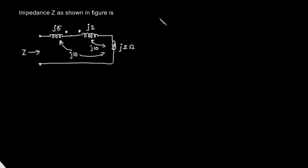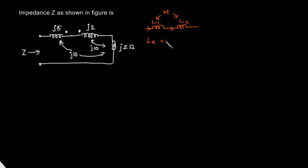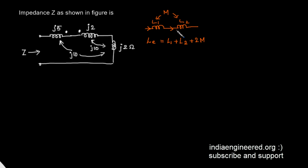We will first go through the basics of mutually coupled inductances. Let's say we have two inductors connected in series. The inductance values are L1 and L2, so the equivalent inductance L_eq will be L1 plus L2 plus 2M, because it is said to be in an aiding configuration.